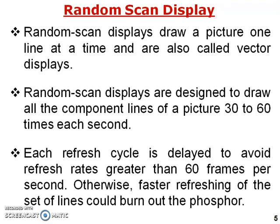The refresh rate for random scan display is 30 to 60 times per second. Each refresh cycle is limited to avoid a refresh rate greater than 60 frames per second, because faster refreshing could burn out the phosphorus layer. To maintain picture quality without any flicker, 30 to 60 frames per second is maintained. Increasing the frame rate beyond this would burn the phosphorus layer.